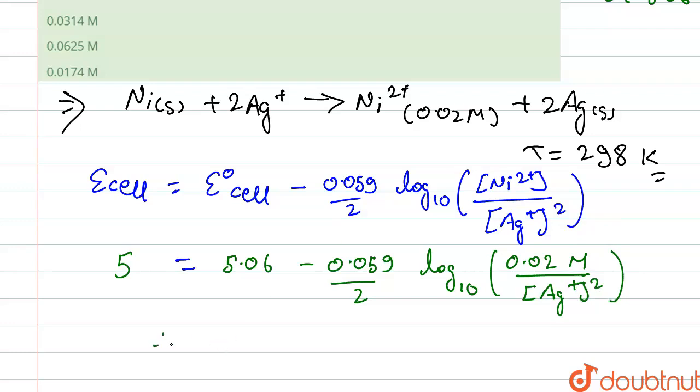After solving this, we get the concentration of Ag+ whole square equals 0.0174 molarity.